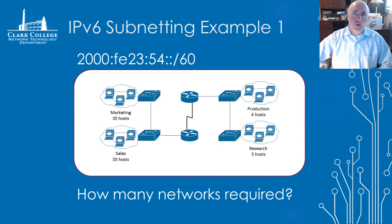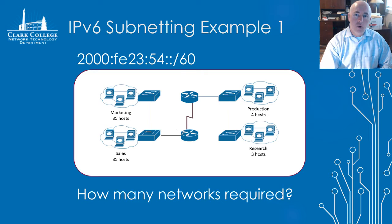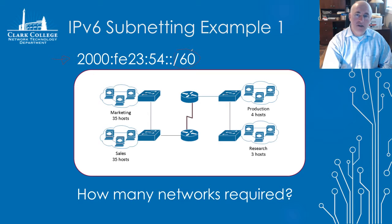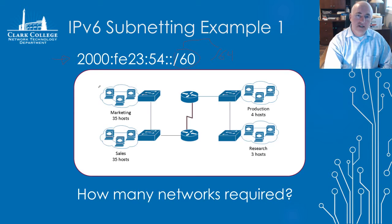In this simple network, we begin with our two prerequisites needed whenever we do subnetting: the user requirements and the assigned network. The assigned network has a prefix of slash 60, meaning the first 60 bits are locked out to us. We know that subnetting bits are from 48 to 64, so we'll be able to use subnetting bits 60 to 64 — that gives us four subnet bits available to use.